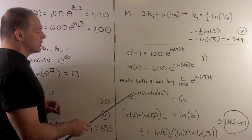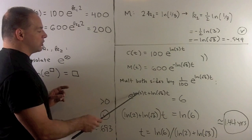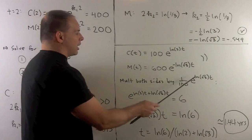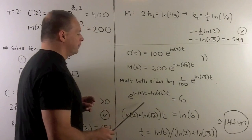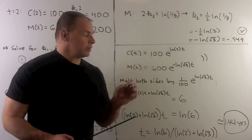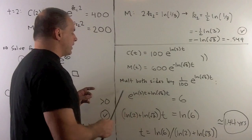Now, that gives us, we're going to have e to the natural log 2 times t. Multiply that by e to the natural log square root of 3 times t. And then since we have like bases, we can add the exponents. So we have this on the left-hand side.